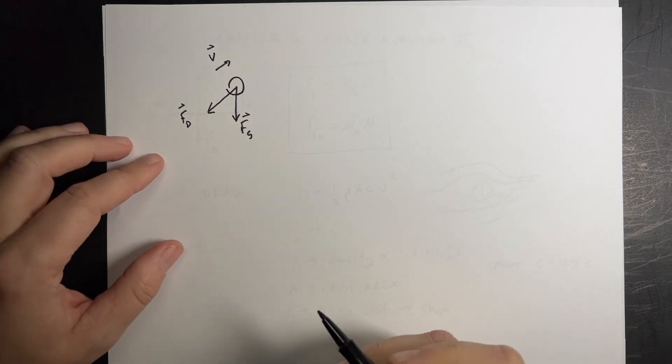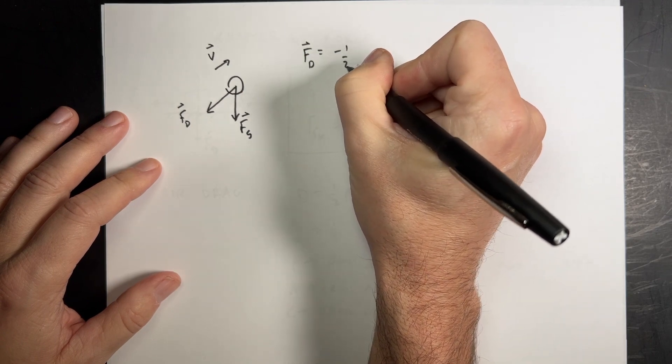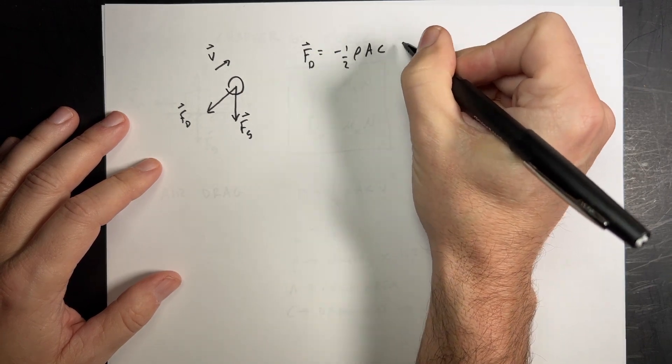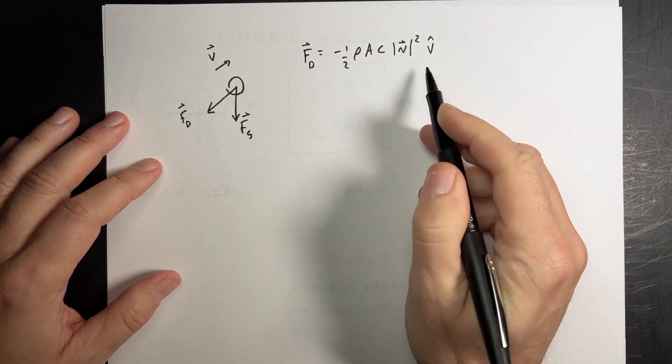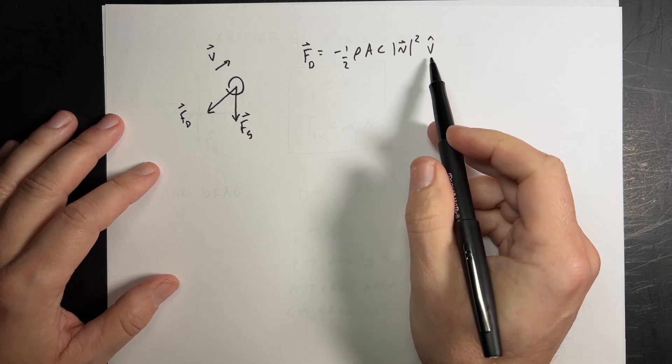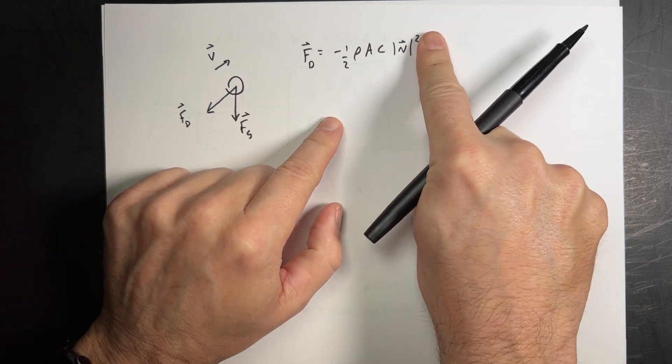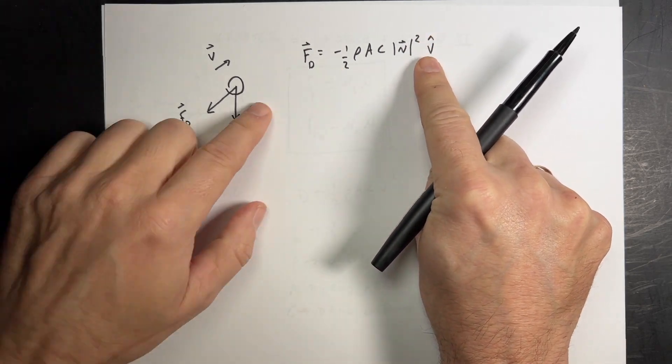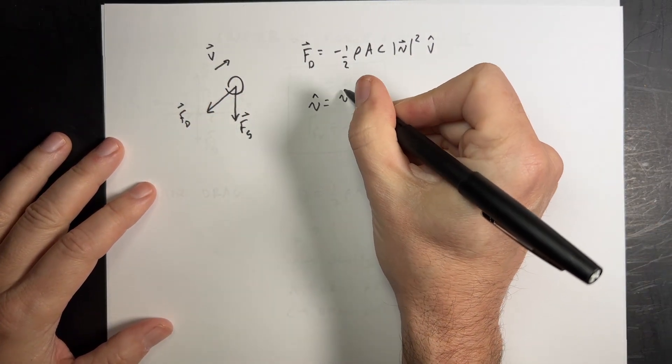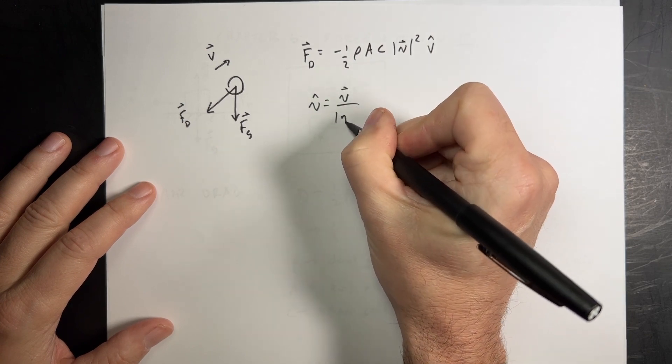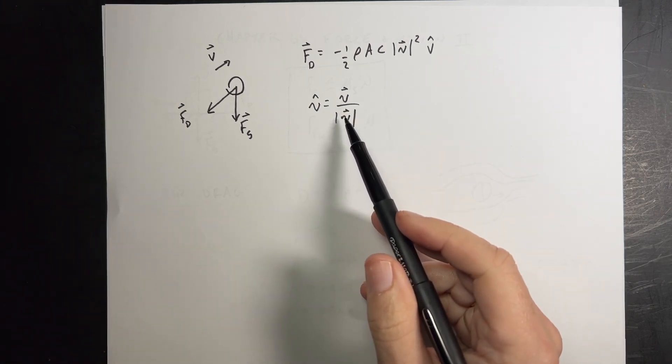Now, how could I find that as a vector? Well, you'd have to write it like this. FD is negative one half rho AC magnitude of the velocity squared V hat. So this is a unit vector. If you haven't seen unit vectors before, a unit vector tells you the direction of a vector, right? So it has a magnitude one and no units. But if I include that with that, this says this force is in the opposite direction of the velocity. So the unit vector V would be the velocity vector V divided by the magnitude of the velocity. And then that makes sure that it is a vector and it has a magnitude one.